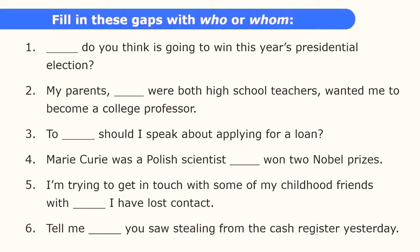Let's discuss the answers. In number one, we can answer this question with he, she, or they — he is going to win the election — so the correct question word is who. In number two, we have relative clauses and we're interested in the clause in the middle. We can say they were both high school teachers — my parents who were both high school teachers wanted me to become a college professor. In number three, there's a to at the beginning, so the answer would be you should speak to him — there's an M in the answer — so: to whom should I speak about applying for a loan?